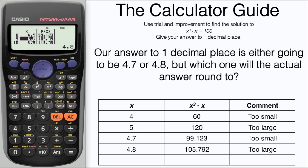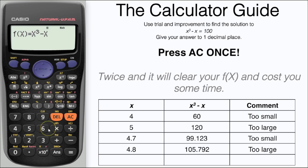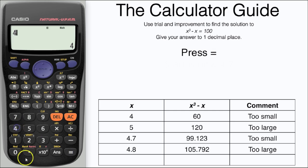For the correct answer we need to go through our table mode trial process once again. Press AC but just once - pressing it twice will clear off your f of X and that might cost you some time. It's slightly counterintuitive but it will take you back to the beginning of the process.